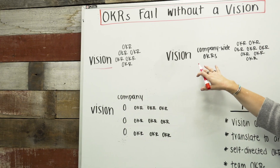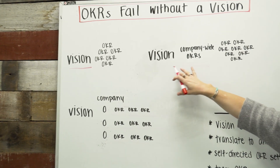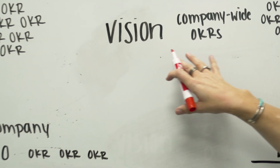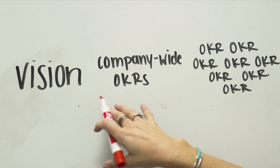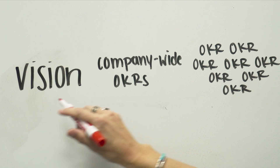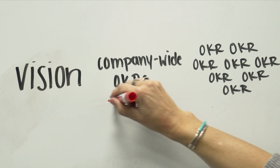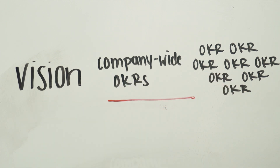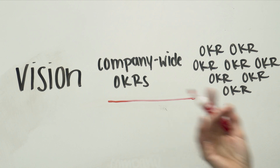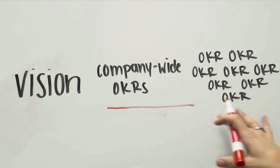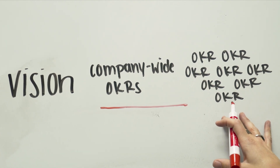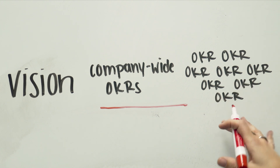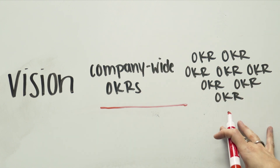An obvious thing to do to fix that is you've got your vision, and you can create company-wide OKRs that start to inform what about the vision are we going to do or tackle this year. Company-wide annual OKRs. And then everybody goes and creates their OKRs, and you know what? You still have an OKR puddle, because everybody goes off and creates their own stuff.